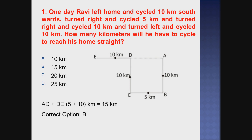Ravi first travels south 10 km - that is south direction. From A to B. I am setting up variables here just for understanding purposes.